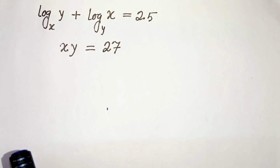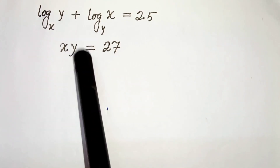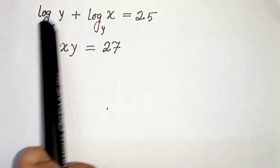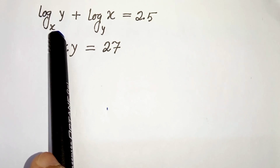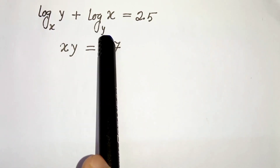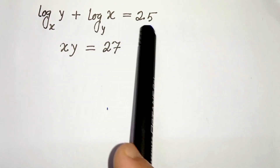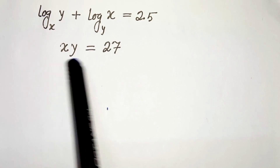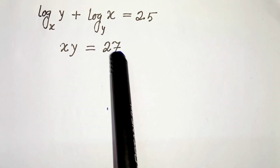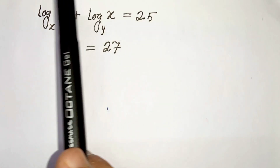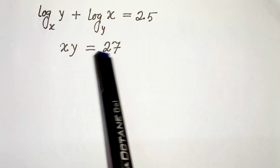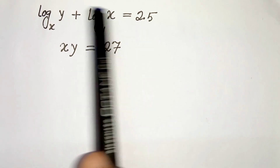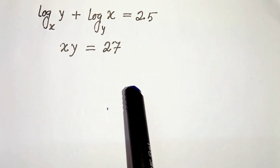Hello everyone. In this video we have two equations: log of y base x plus log of x base y equals 2.5, and x times y equals 27. We have to solve these two equations and find the common solution to both.